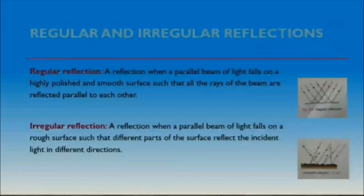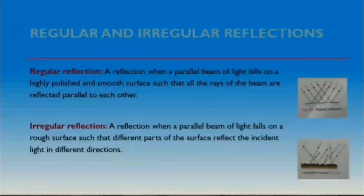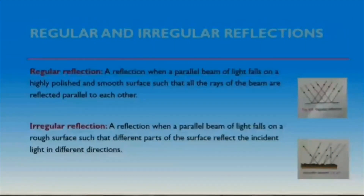The second type of reflection is the irregular reflection, also known as diffused reflection. Irregular reflection occurs when light falls on a rough surface like a road, door, ordinary floor, and table. Such a surface might look smooth, but if we observe closely, it appears rough. When a parallel beam of light falls on a rough surface, different parts of the surface reflect the incident light in different directions. This can be seen in a scratched mirror and rippling water. Even in this case, the reflected rays obey the two laws of reflection.